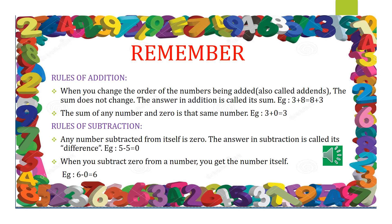Let's recollect some of the rules followed in Addition and Subtraction. Rules of Addition: when you change the order of the numbers being added, the sum does not change. The answer in Addition is called the sum. That is, when you add 3 plus 8 or 8 plus 3, your answer will be the same. The sum of any number and 0 is that same number. For example, 3 when added to 0 gives you 3.